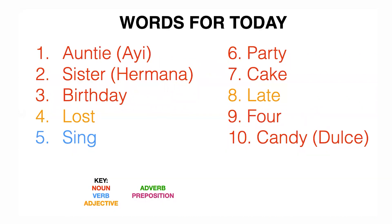So today I thought we would start with auntie, which is 'ii,' and sister, 'Hermana,' birthday, lost, sing, party, cake, late, four — that's the number four — and candy, which is 'dulce.' You can use both of these words including the international word in your story, and then you get bonus points.